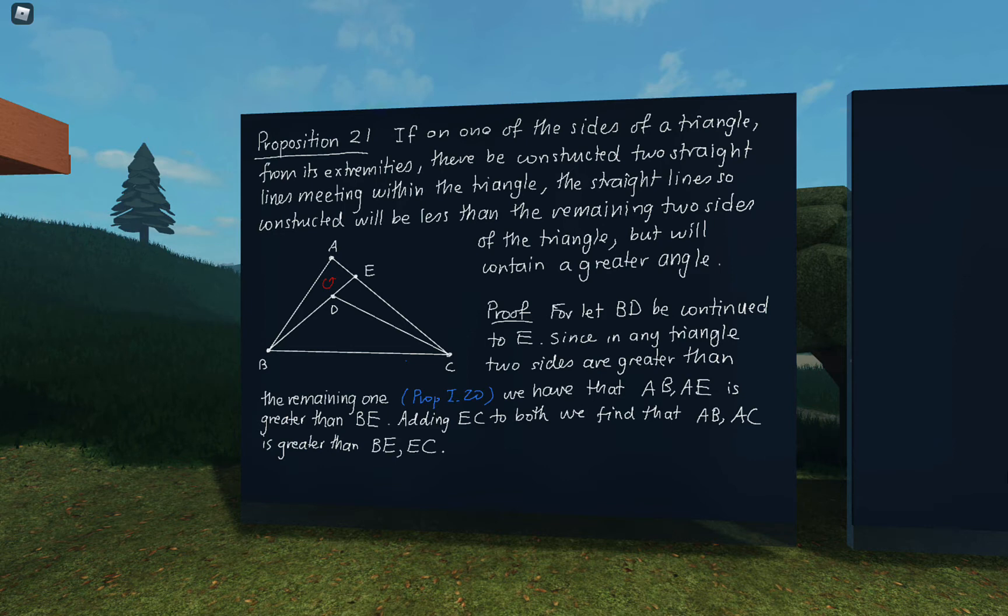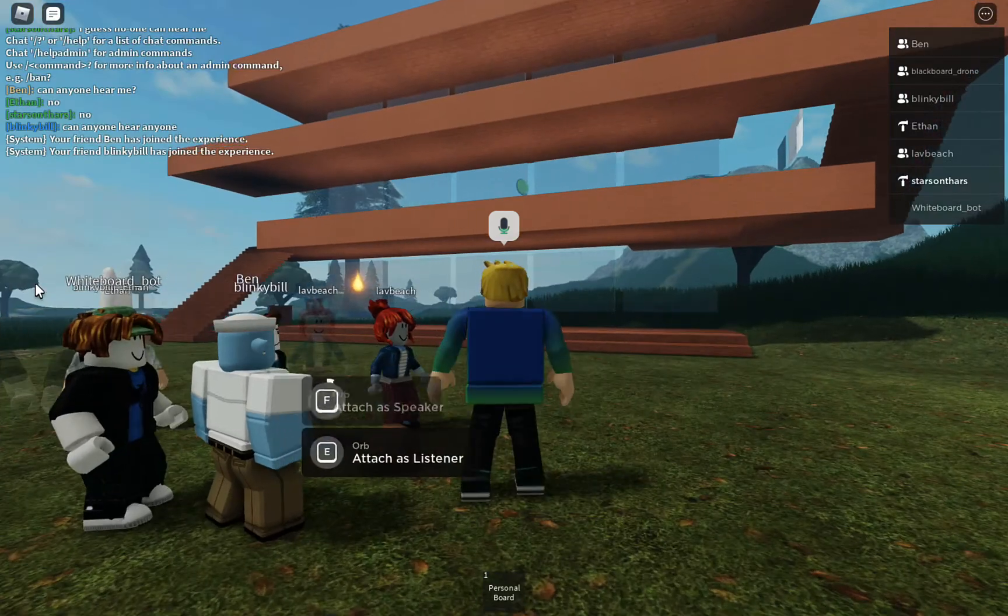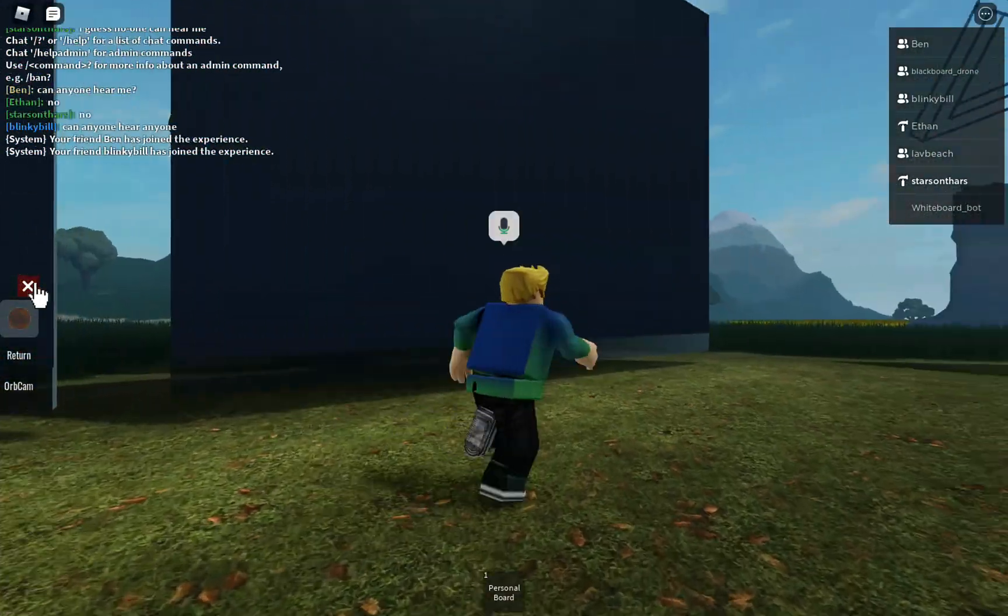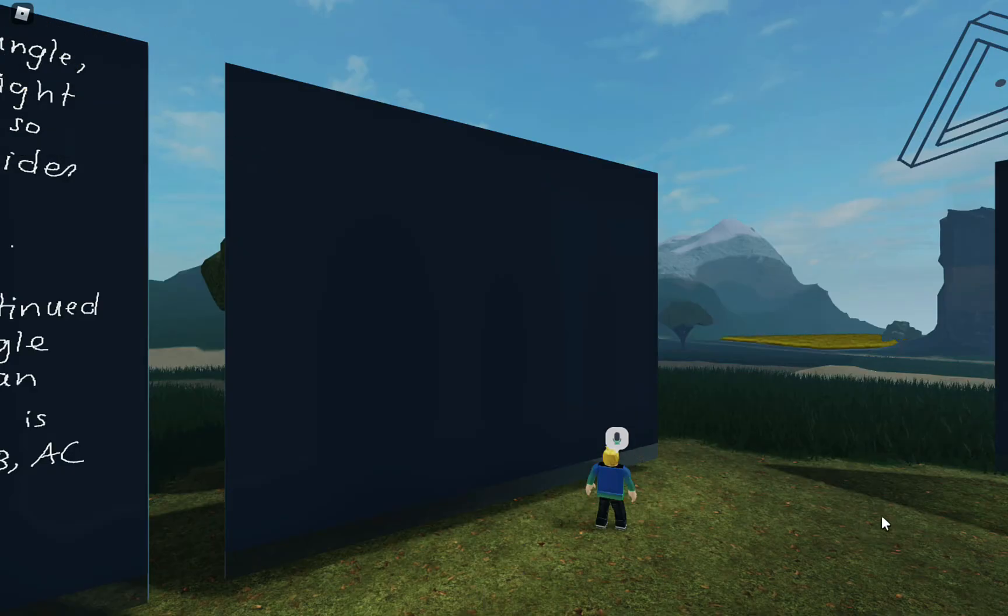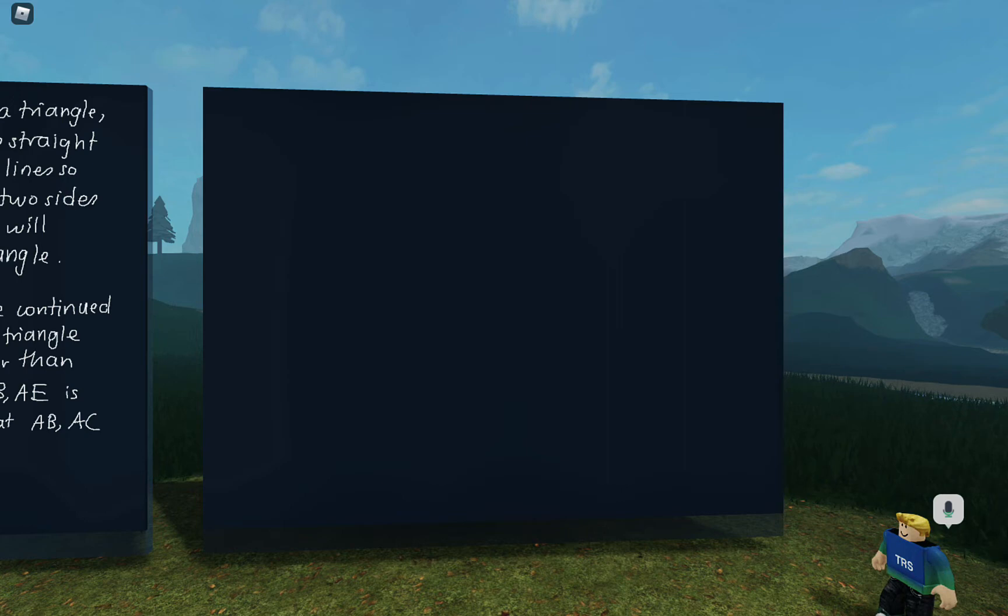For the next step maybe I'll move to the second board. Okay, technical problem here. The speaker is attached as a listener, just a second. Okay, so what did we just do? AB, AC is greater than BE, EC, right?